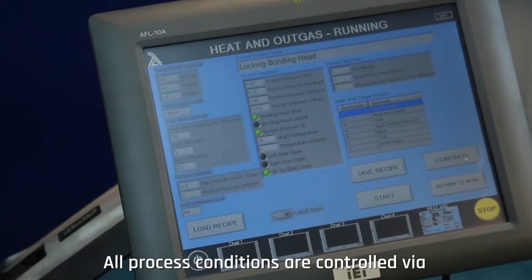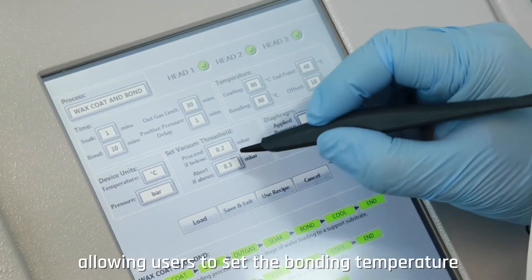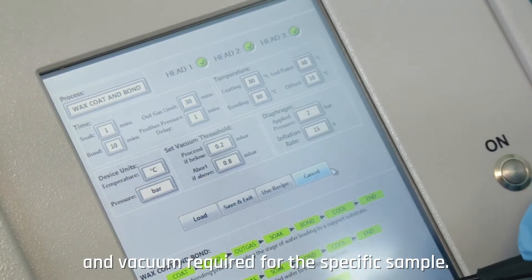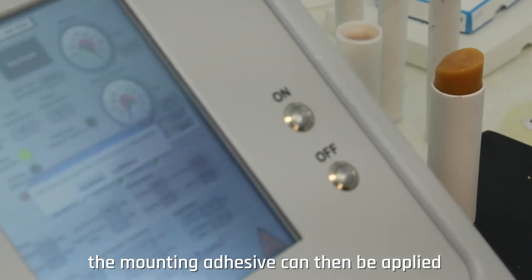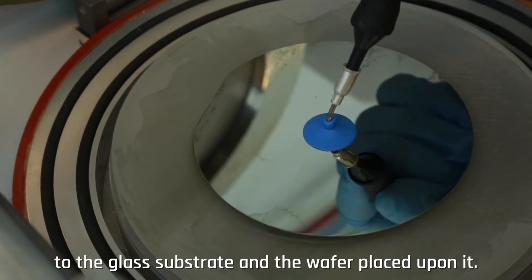All process conditions are controlled via the graphical user interface or GUI, allowing users to set the bonding temperature and vacuum required for the specific sample. Once the bonding temperature has been set and reached, the mounting adhesive can then be applied to the glass substrate and the wafer placed upon it.